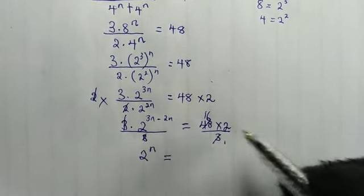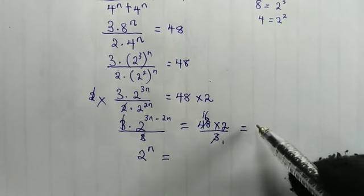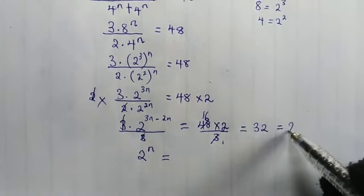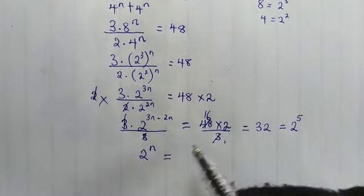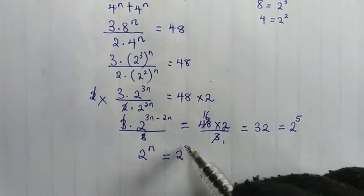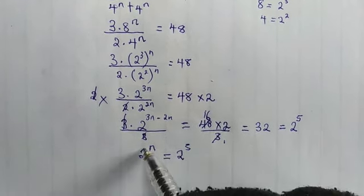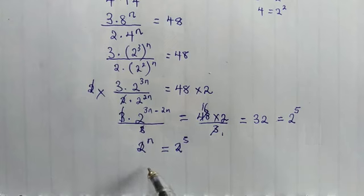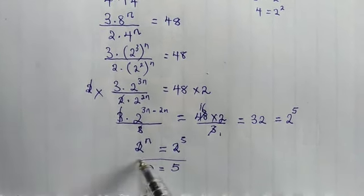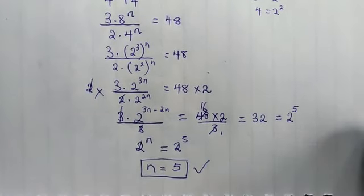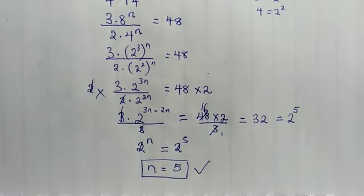So 2^n equals 16 times 2, which is 32, and 32 is the same as 2 to the power of 5. Therefore 2^n equals 2^5. Since the bases are equal, we equate the powers and find n equals 5. Thank you for watching, please kindly subscribe to my channel, like, comment and share. Bye bye!